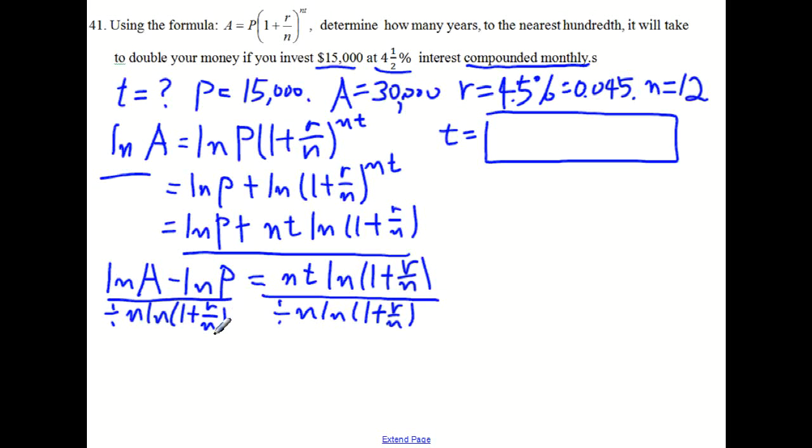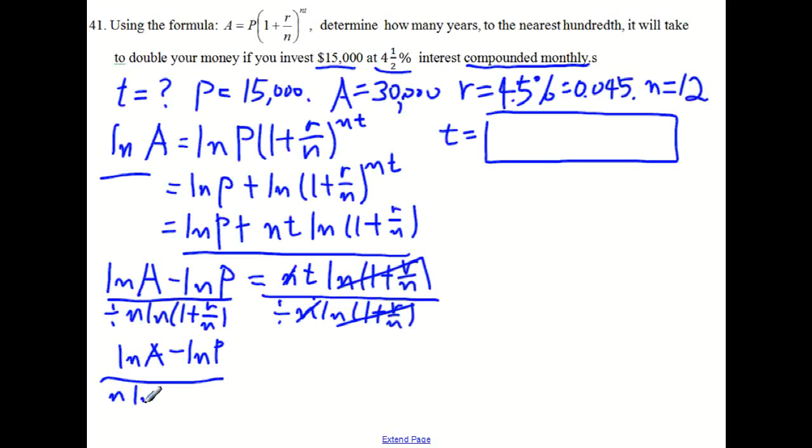So what is t? So what is t? T is, so these are all cancelled out. So the right side is t. And the left side is this. So this is ln of A minus ln of P over n times ln of 1 plus r over n. This is t.